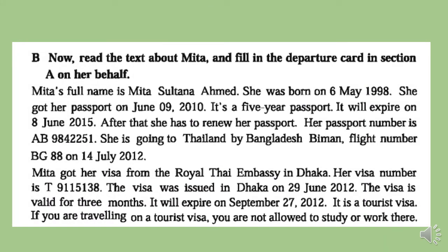Here is another text about Mita. This text contains the important information of Mita, and we need to fill the departure card on Mita's behalf. Mita's full name is Mita Sultan Ahmed. She was born on 6th May 1998. She got her passport on June 9, 2010, and it is a five-year passport that will expire on 8th June 2015. Her passport number is AB9824251. She is going to Thailand by Bangladesh Biman flight number BG88 on 14th July 2012.